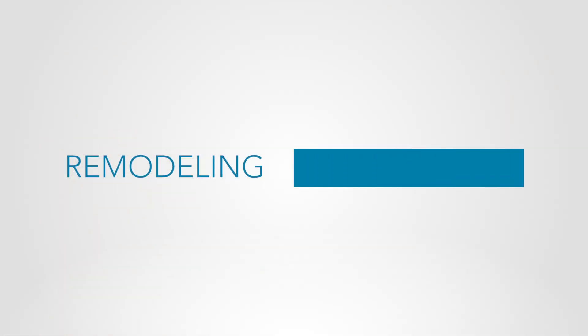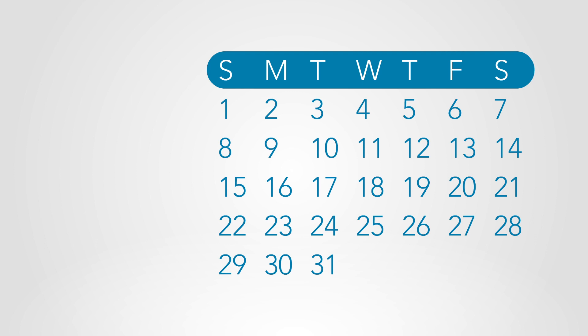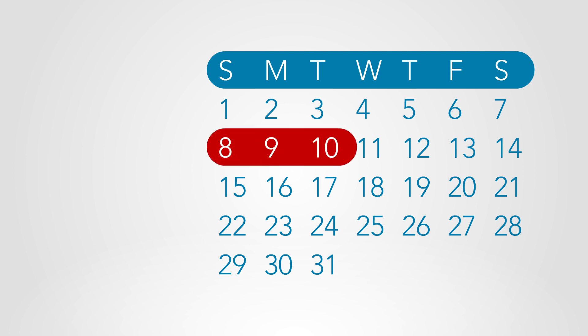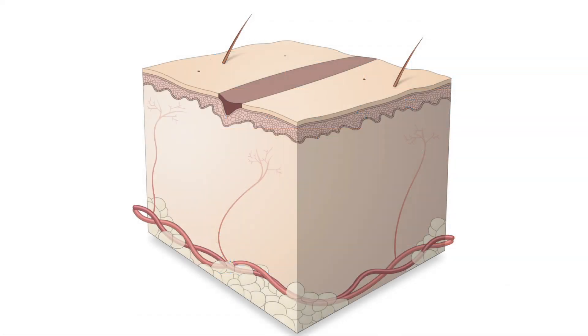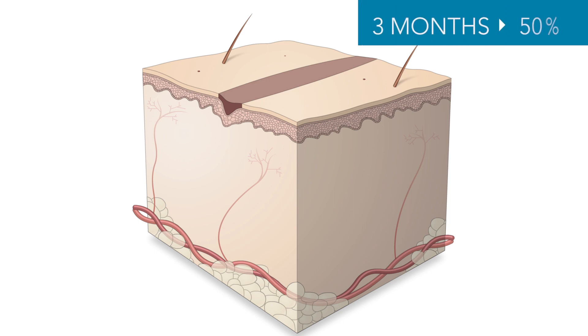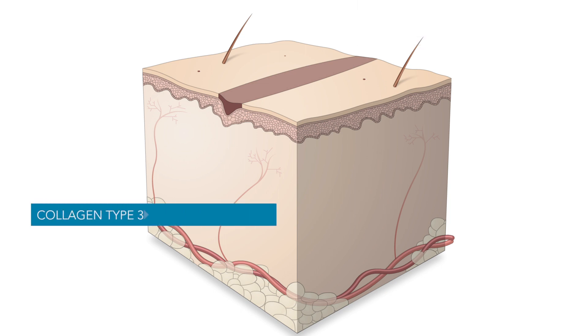During maturation and remodeling, collagen is remodeled and realigned along tension lines. The onset of the maturation phase may vary depending on the size of the wound and whether it was initially closed or open, ranging from three days to three weeks. As the phase progresses, the strength of the wound increases, approaching 50% that of normal tissue by three months after injury and ultimately becoming as much as 80% as strong as normal tissue.